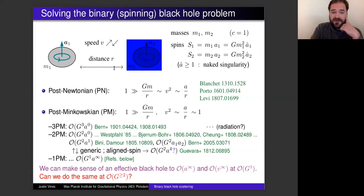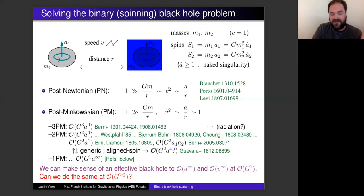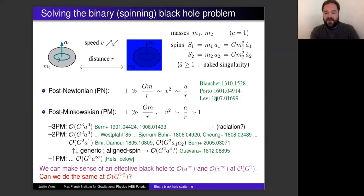The traditional perturbative approach to the binary black hole problem is the post-Newtonian method, where the small parameter GM/r measures the field strength. We assume that's small, and for a bound orbit that's the same order as the velocity squared. For sub-extremal black holes, the rescaled spin (ring radius over separation) is also the same order. All three small parameters are treated together — that's the post-Newtonian approach.